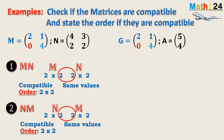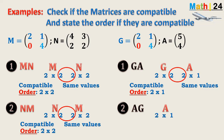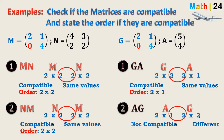For the second set, G is [2, 1; 0, 4] and A is [5; 4]. For the product GA: G has order 2×2 and A has order 2×1. The number of columns in G equals the number of rows in A, so they are compatible, and the resulting matrix has order 2×1. For the product AG: A has order 2×1 and G has order 2×2. The number of columns in A — which is 1 — does not equal the number of rows in G — which is 2 — so this product is not possible.